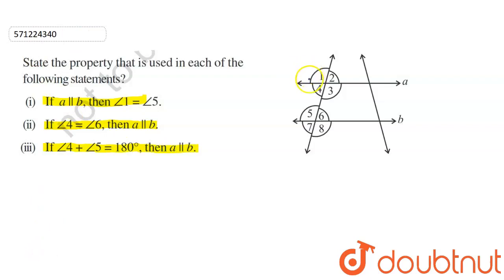In the first part, if a is parallel to b, then angle 1 equals angle 5. This is angle 1 and this is angle 5. Let's name this line as l and this as n. You can see that a is parallel to b, and l is the transversal. Therefore, angle 1 equals angle 5 because they are corresponding angles.